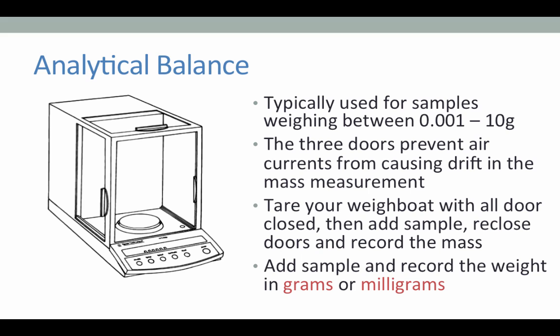The analytical balance, on the other hand, is typically used for smaller samples that weigh between 0.001 and 10 grams. This is because an analytical balance will display a mass down to 0.0001 grams, or one-tenth of a milligram. You will note that an analytical balance has three sliding glass doors. These doors prevent any air currents or small drafts from causing a drift in the mass measurement. It's important that these doors are closed both when zeroing or taring the instrument and when weighing your sample.